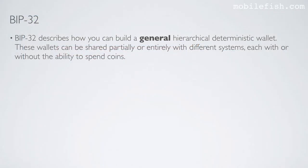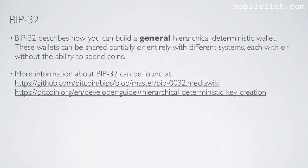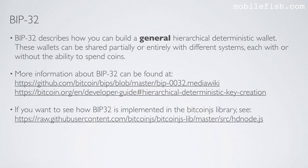Bitcoin Improvement Proposal 32 describes how you can build a general hierarchical deterministic wallet. These wallets can be shared partially or entirely with different systems, each with or without the ability to spend coins. More information about Bitcoin Improvement Proposal 32 can be found at the following two locations. If you want to see how Bitcoin Improvement Proposal 32 is implemented in the Bitcoin.js library, see this location.